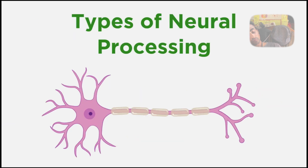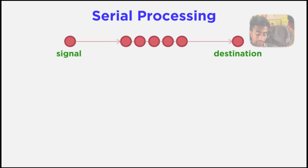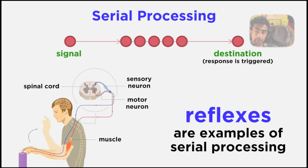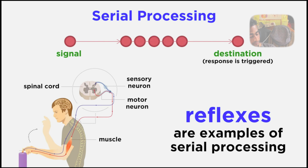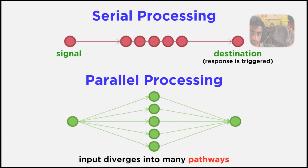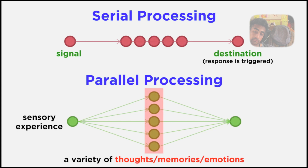With the types of circuits covered, let's examine two types of neural processing. Serial processing is all-or-nothing: a signal travels from one neuron to the next, eventually triggering the desired response — reflexes are examples of this. Parallel processing, on the other hand, occurs when an input diverges into many pathways, and each pathway receives and interprets the information in its own way. This is how smelling something or hearing a particular song can trigger a variety of thoughts, memories, and emotions.